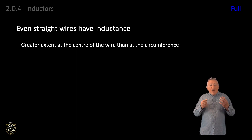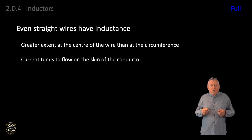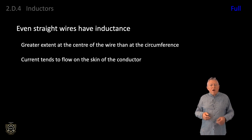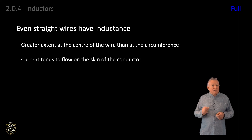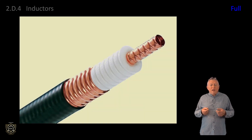The result is that for AC signals, the current tends to be pushed out to the skin of the conductor. This skin effect becomes significant over very long distances or very high frequencies. Overhead electricity distribution cables are often hollow to save weight as the centre part of the conductor carries little current. Coaxial feeders used for higher frequencies also use hollow centres, as shown in the graphic here.